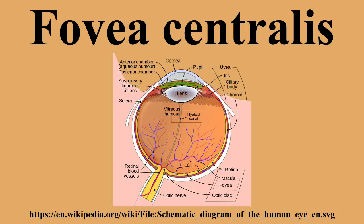The fovea centralis is a small, central pit composed of closely packed cones in the eye. It is located in the center of the macular lutea of the retina. The fovea is responsible for sharp central vision, which is necessary in humans for activities where visual detail is of primary importance, such as reading and driving.